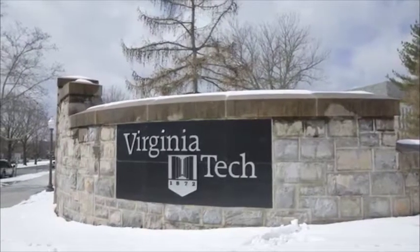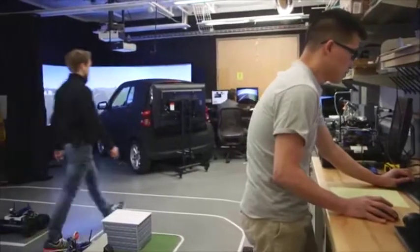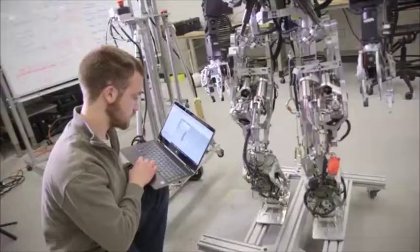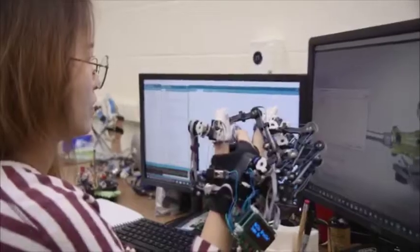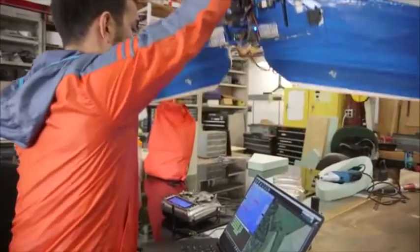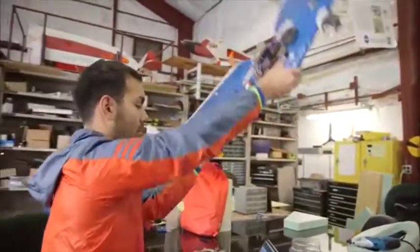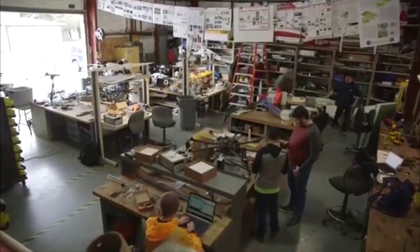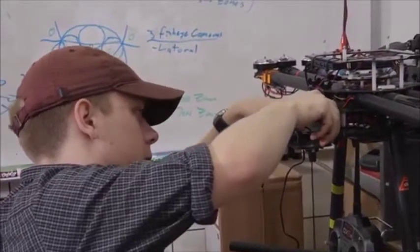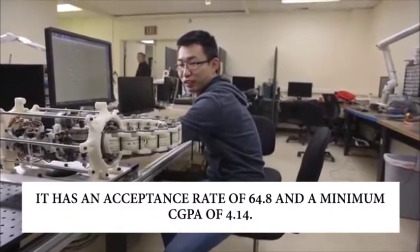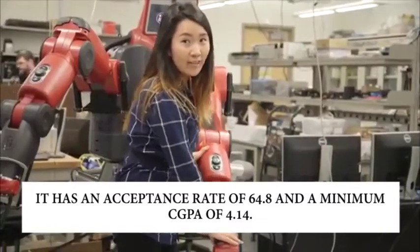Number four: Virginia Tech. Virginia Tech is the fifth largest producer of engineering graduates in the nation. For a long time, they've remained focused on solving problems in addition to conducting global research. Over 11,000 students are studying different programs around its engineering discipline at both the graduate and undergraduate levels. Every year, Virginia Tech has experienced a 20% increase in the number of applications for its engineering programs. And instead of rejecting students, they accept more. It has an acceptance rate of 64.8% and a minimum GPA of 4.14.